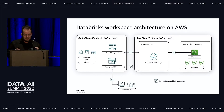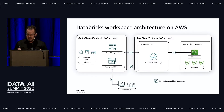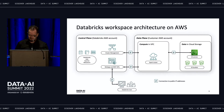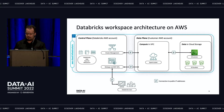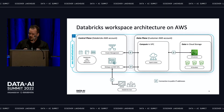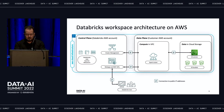Even if the IP addresses of the control plane services are public, the cluster nodes are in subnets with private IP addresses and cannot be reached from outside the VPC. Moreover, as both the control plane and data plane stay in the same AWS region, network traffic between them never leaves the internal AWS backbone, making the network infrastructure as secure as possible.